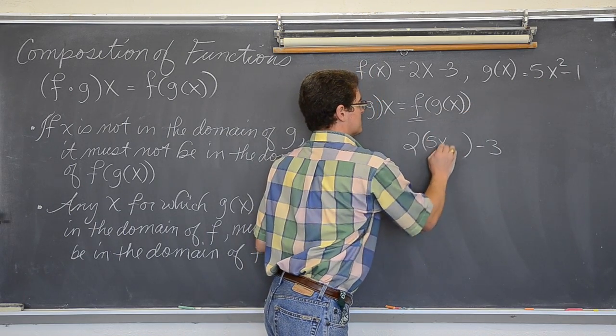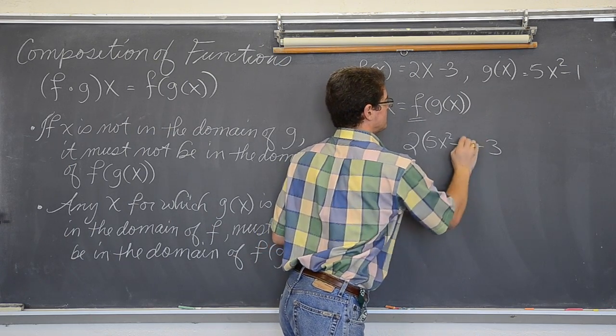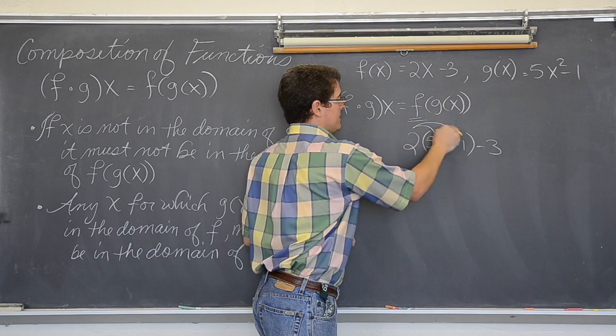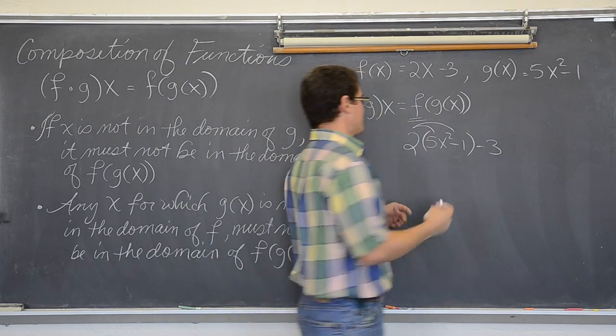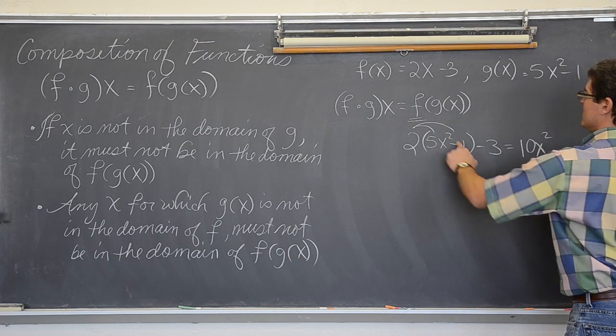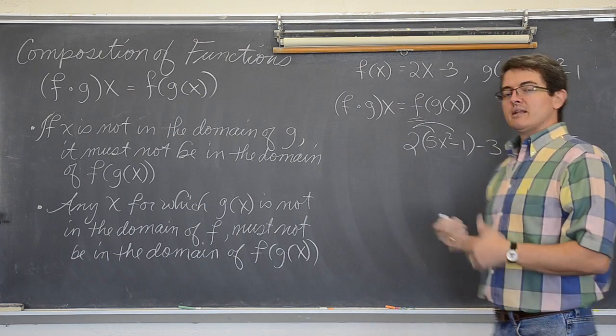So, 5x squared minus 1, not x, where the x used to be. Then, clean it all up, work it out, simplify. 2 and 5 is 10, x squared. 2 and negative 1 is negative 2. Minus 3 is negative 5.